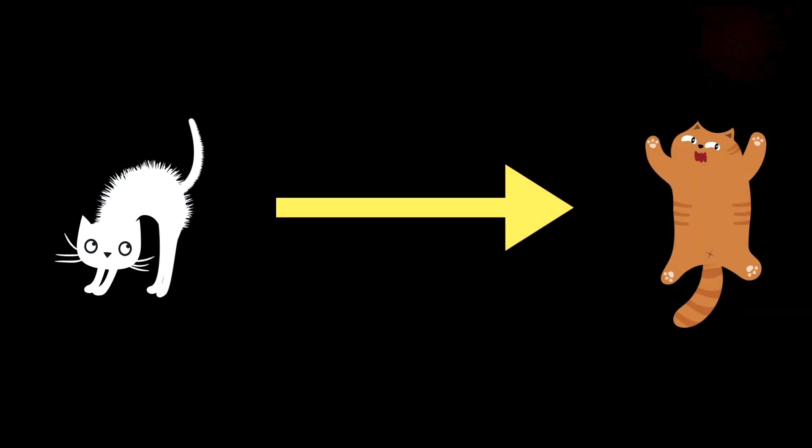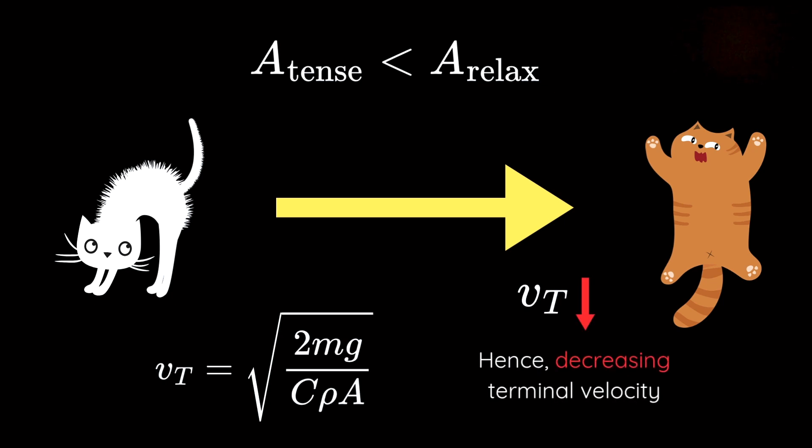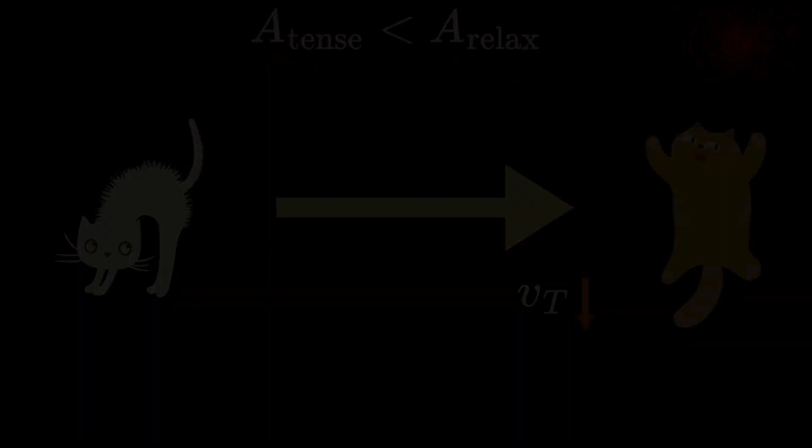By increasing the surface area mid-fall, cats reduce their terminal speed even further. This means they hit the ground at a much lower velocity, significantly decreasing the force of impact and boosting their chances of survival. It's an elegant interplay of physics and instinct, and that's why cats can survive falls from astonishing heights.